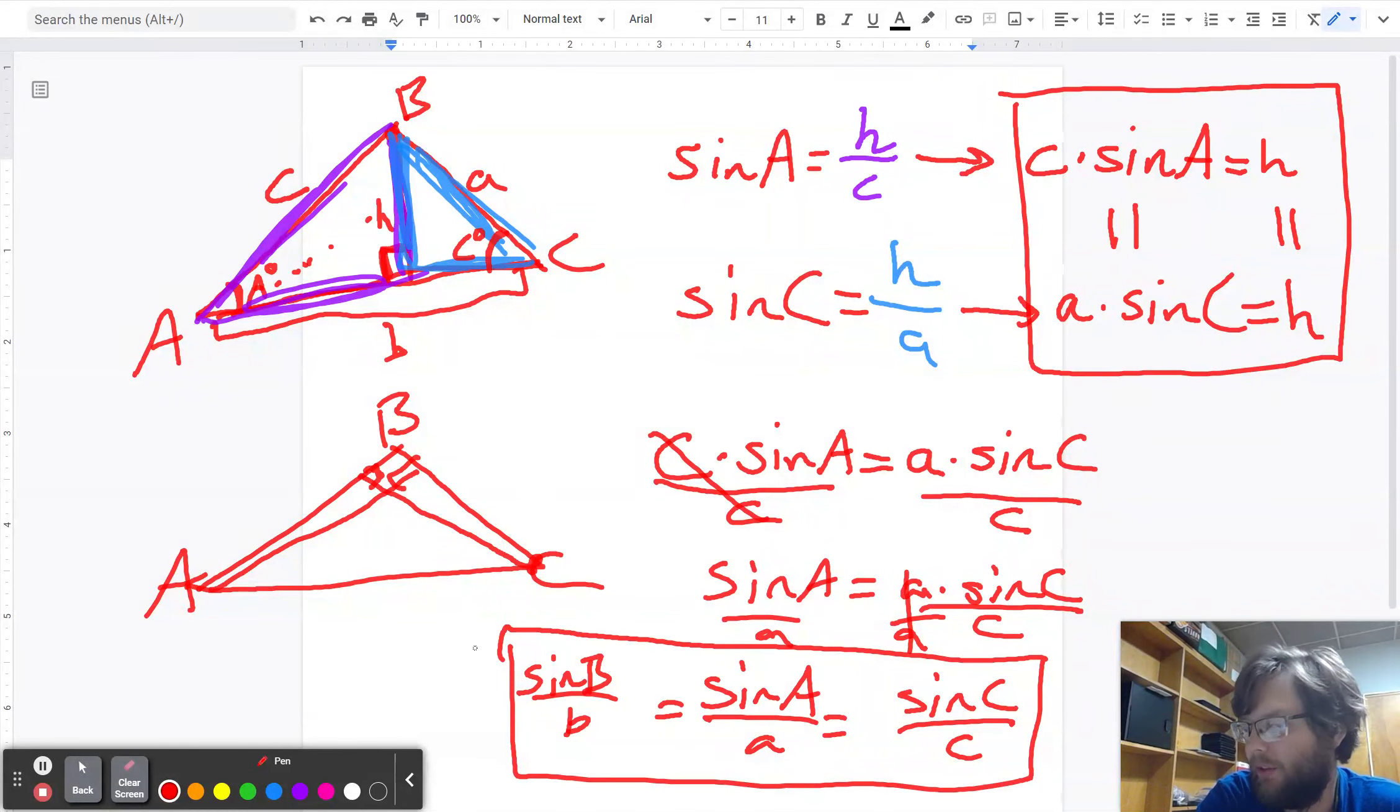You're not going to be asked to derive that yourself, but I always think it's important to get an idea of where it came from. And so this is a nice idea that lets you figure out missing sides and angles when you know three out of the four pieces of information. So you're always going to be taking it, you know, two pieces at a time,